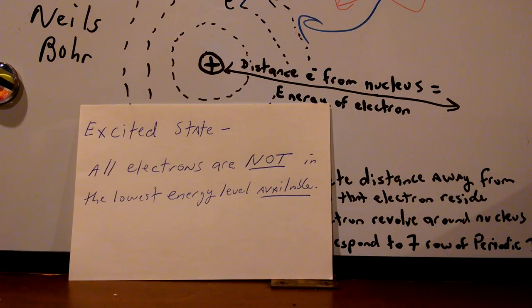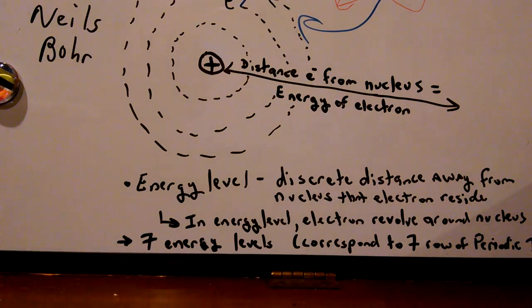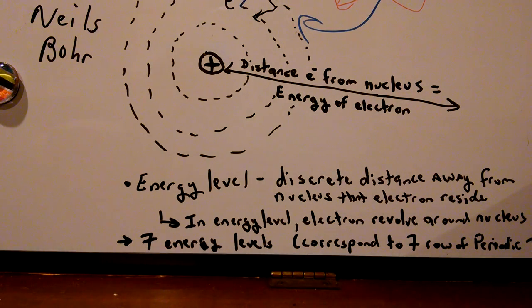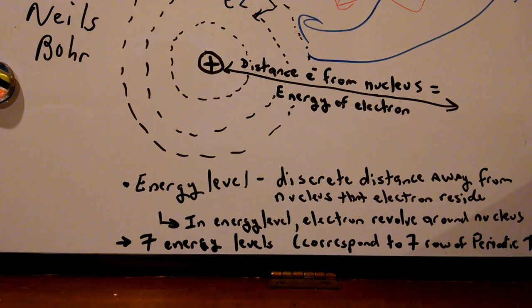And now, since the electron is in the higher energy level, not all the electrons are in the lowest available energy level. So the atom is said to be in what they call the excited state. The excited state is when all electrons are not in the lowest energy level available — and it only requires one electron to be not in the lowest available energy level.